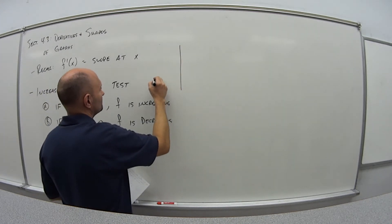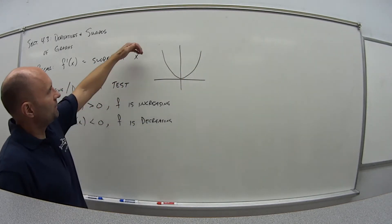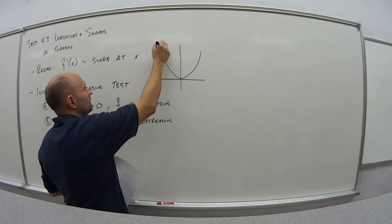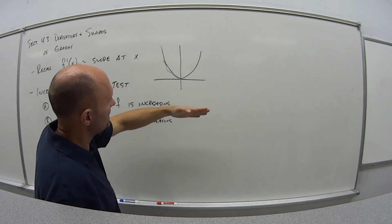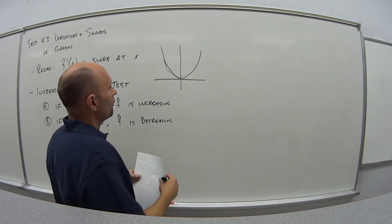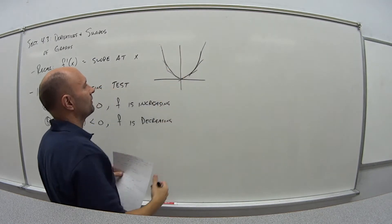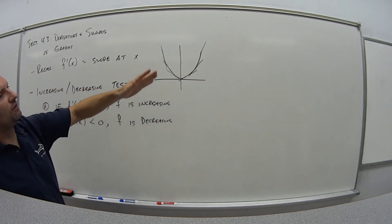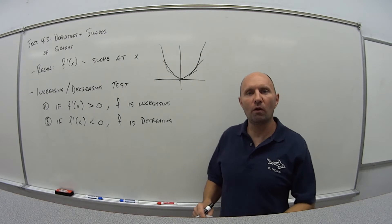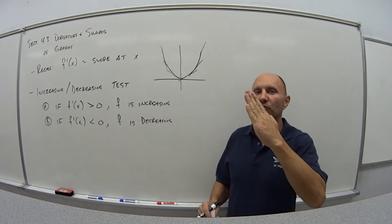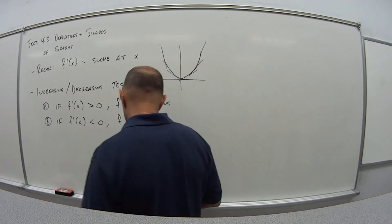Let's look at our good old friend, the parabola. If I take the derivative, the slope of the line at all of these points on the left is negative — it's running downhill, so the function is decreasing. Over here on the right side of 0, the slope of these lines is a positive value, so the function is increasing. So if I told you the derivative of a function at x equals 4 is equal to 12, you know that at that exact point, that graph is running uphill — it is increasing. That's our increasing/decreasing test.